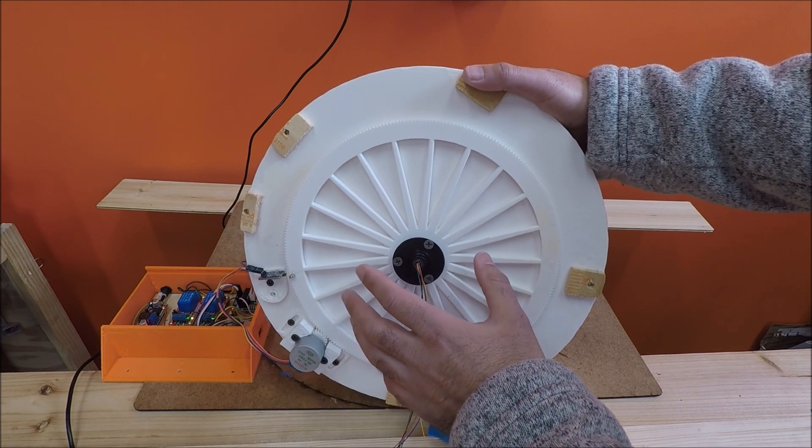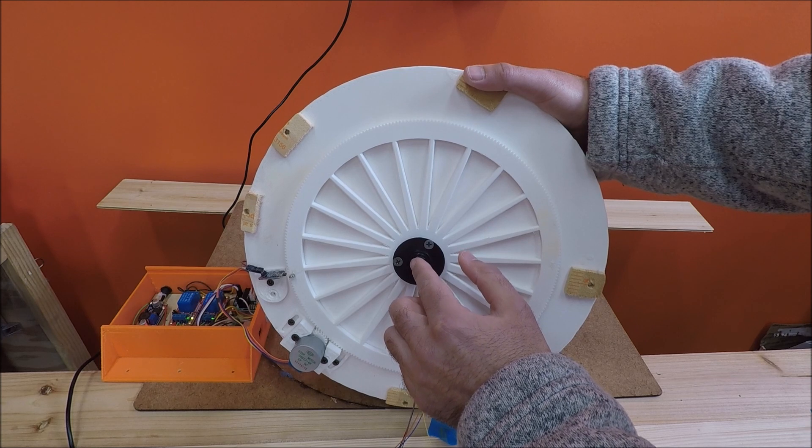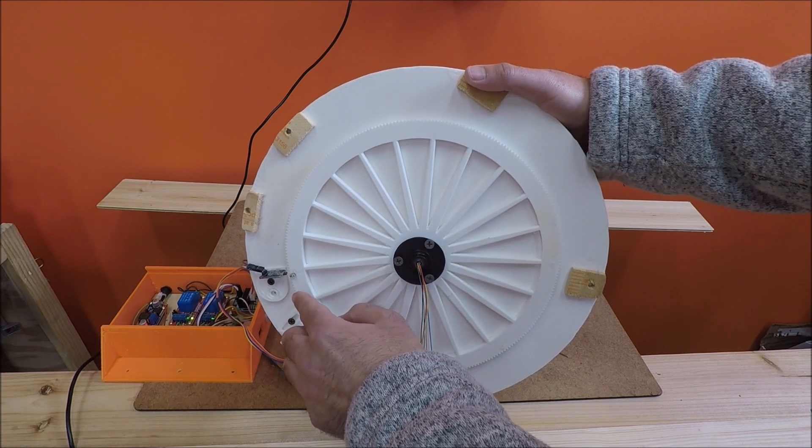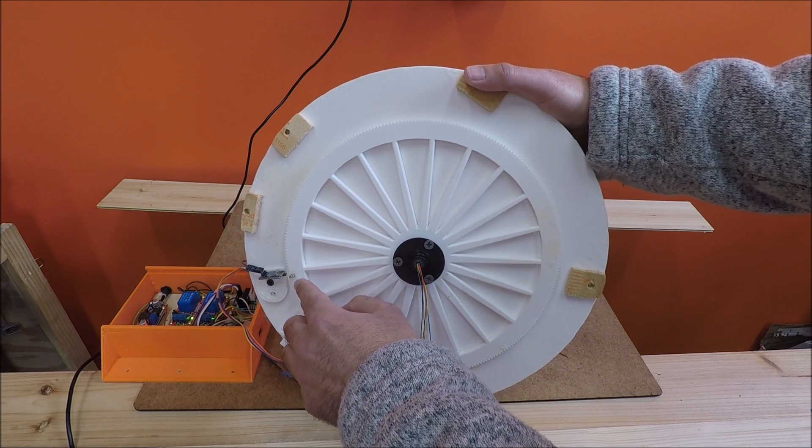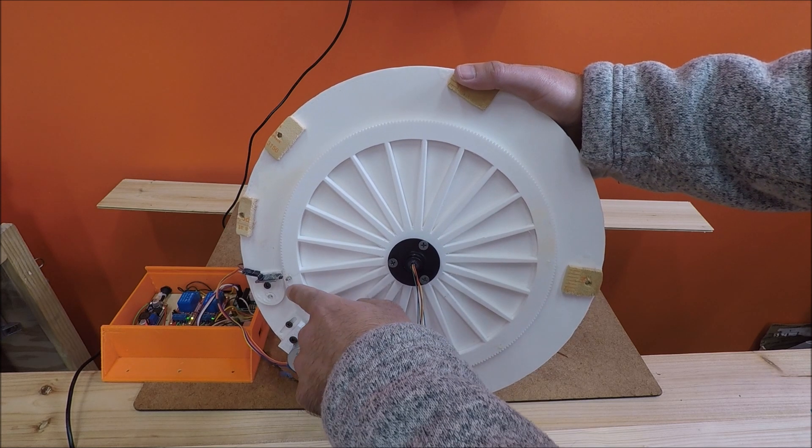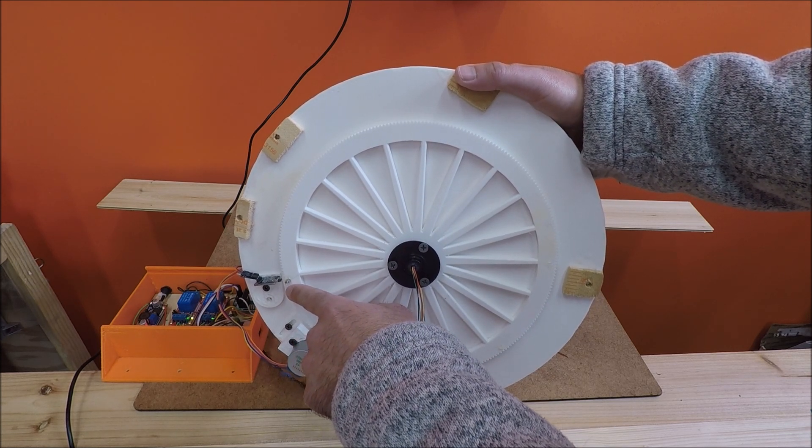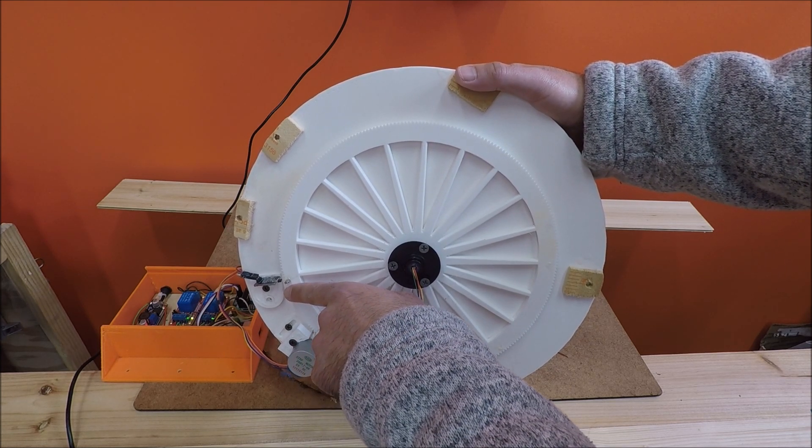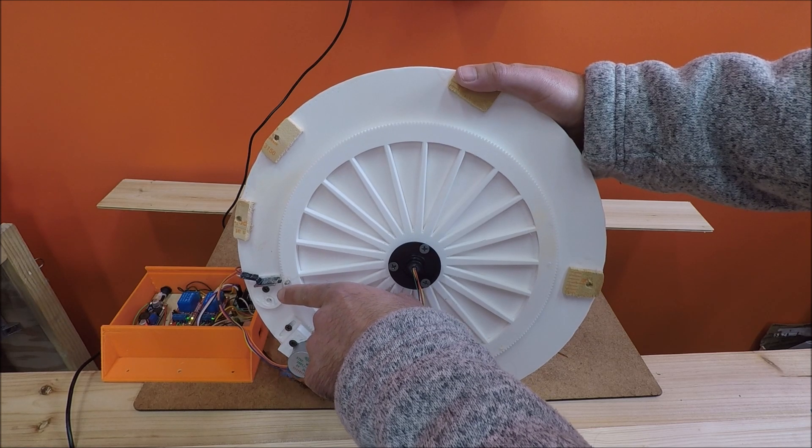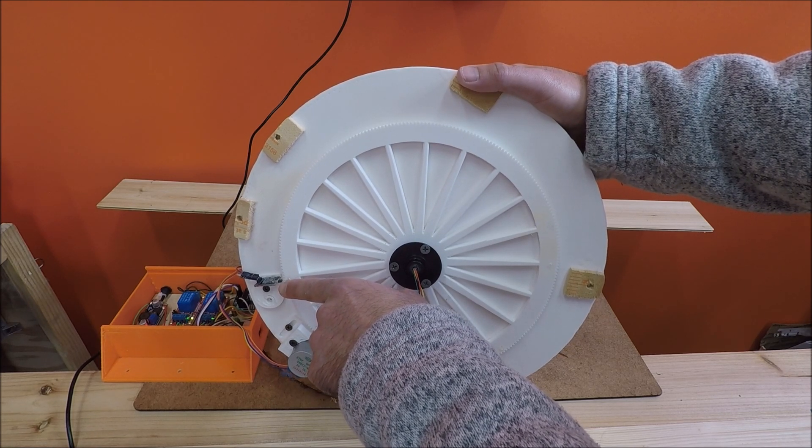It's important that the neodymium magnet be as far away from the center of the turntable as possible, and it needs to move along with the turntable. So I just super glued the magnet here and you need to have it so that the magnet edge is as small as possible as it goes across the hall effect sensor.